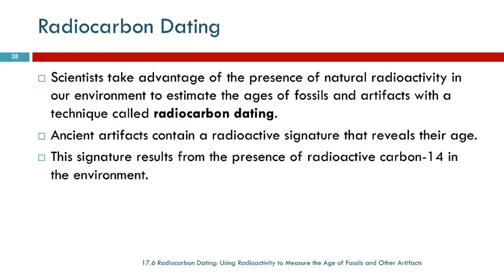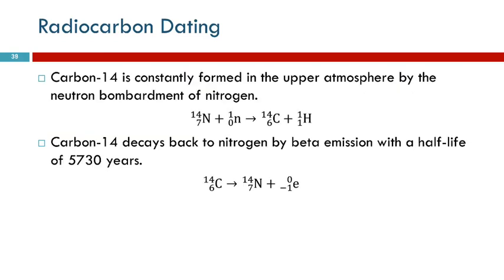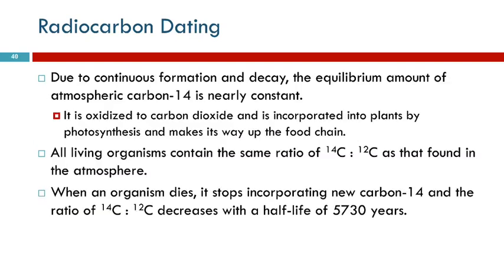Carbon-14 is constantly being formed in the upper atmosphere through neutron bombardment of nitrogen. So there's a relatively constant level of carbon-14 in the atmosphere — it's formed and then it slowly decays back to nitrogen with a half-life of 5,730 years. The amount of atmospheric carbon-14 is nearly constant.